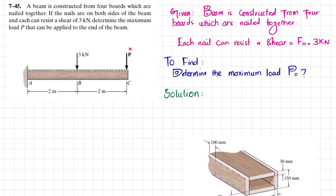Let's start with the solution. For this cantilever beam, if we remove the support there will be a reaction force Ra and a reaction moment Ma. We will find these using equations of equilibrium. The first equation of equilibrium is: sum of all moments about point A is equal to zero, taking counterclockwise moment as positive.